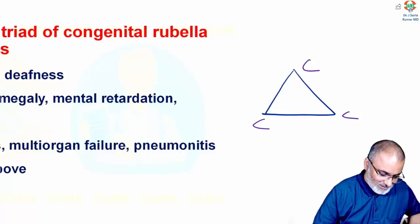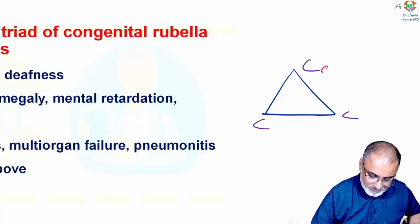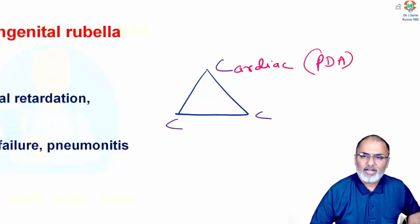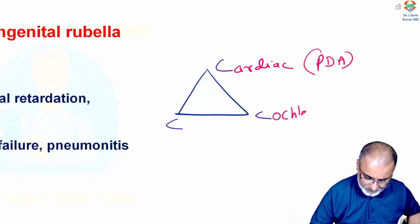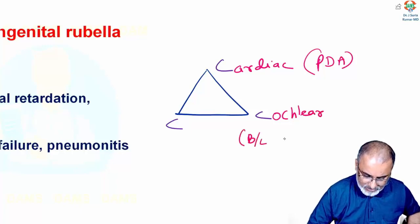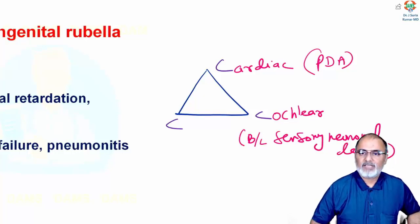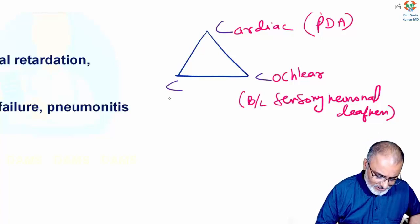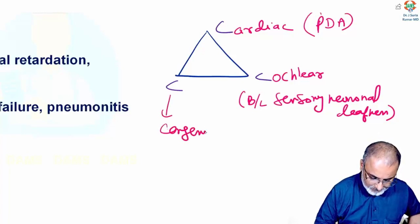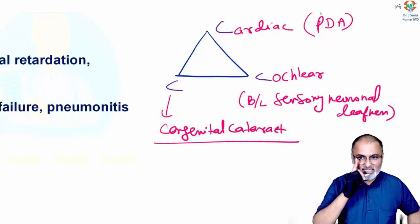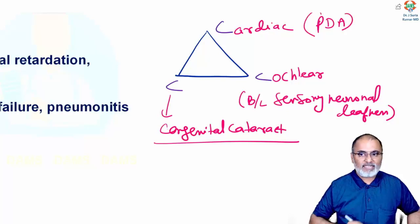What is CCC? C for cardiac defect, mainly patent ductus arteriosus. Another C is for cochlear defect — bilateral sensorineural deafness. And the third C is for congenital cataract. So CCC affects the eyes (congenital cataract), ears (deafness), and the heart (patent ductus arteriosus).